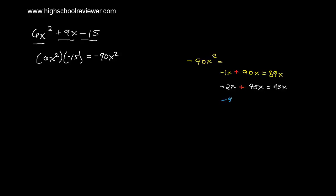Let's try negative 5x and positive 18x. Negative 5x plus 18x gives positive 13x — not equal to our middle term. Let's try negative 6x and positive 15x. Negative 6x plus 15x gives positive 9x, which is equal to our second term. These are the factors we are going to use.